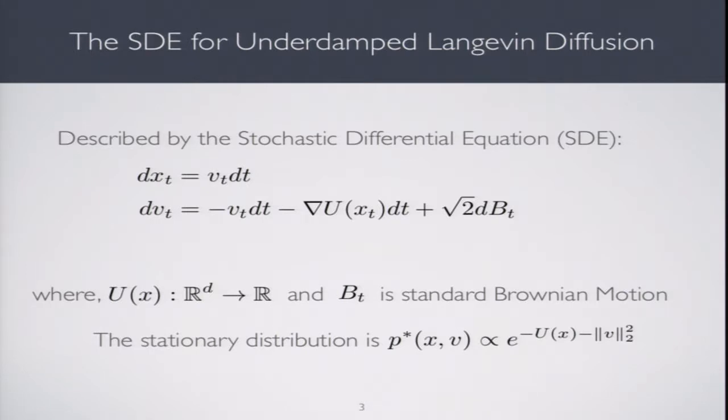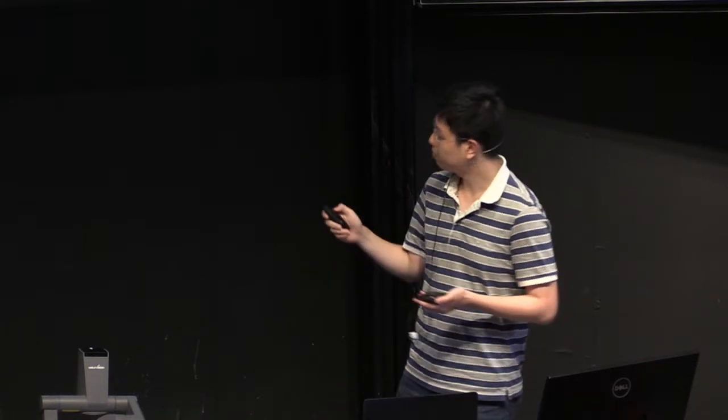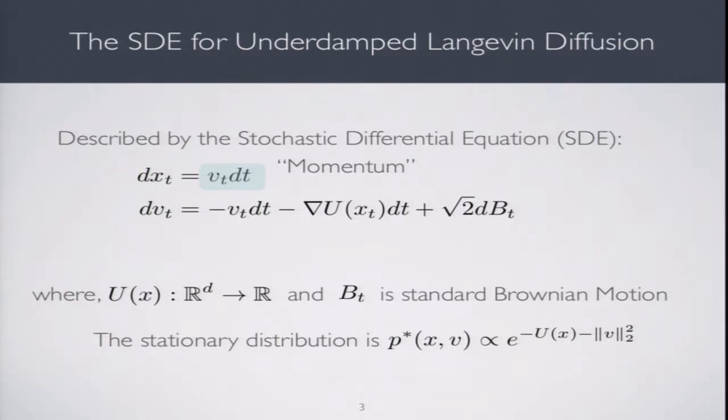It's worth spending a few moments considering this stochastic differential equation because it really is quite intuitive. The variable x can be thought of as a position variable and v as the momentum or velocity variable. The first line makes intuitive sense—by definition your position evolves according to your velocity. dx_t is v_t dt.